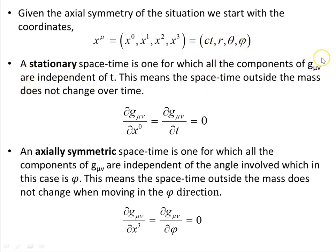A stationary spacetime is one for which all the components of the metric g_μν are independent of t — the spacetime outside the mass does not change over time, so the partial derivative of the metric with respect to the time coordinate is zero. An axially symmetric spacetime is one in which all components of g_μν are independent of the angle phi, meaning the spacetime does not change when moving in the phi direction, so the partial derivative with respect to phi is also zero.